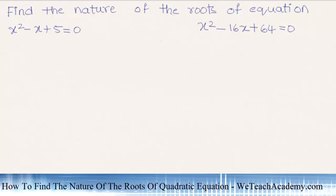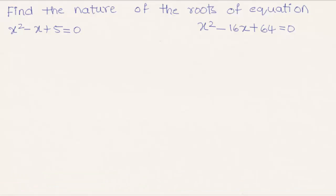Welcome to vteachacademy.com. In this presentation we are going to solve an example on how to find the nature of roots of a quadratic equation. Here, find the nature of roots of the quadratic equation x squared minus x plus 5 equal to 0.